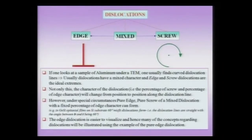If I look at a sample of aluminum under a TEM, we have pointed out that typically one finds a curved dislocation line. There will be a lot of dislocations typically — even in a well-annealed sample of aluminum, you will find a lot of dislocations in a transmission electron microscope. And if you take a deformed specimen of aluminum, then you will find that there are far more dislocations in the material.